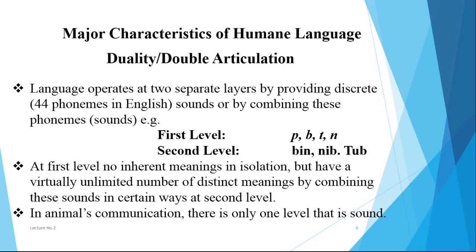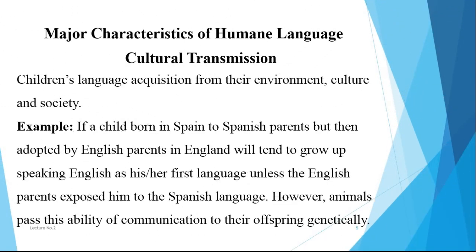Next, cultural transmission is another characteristic of human language. Language is learned from the environment and culture — child language acquisition is a form of cultural transmission. For example, if a child is born in Spain to Spanish parents but is adopted by English parents in England, that child will grow up in an English-speaking community and their first language will be English, unless exposed to Spanish. However, animals pass their communication abilities to offspring genetically.